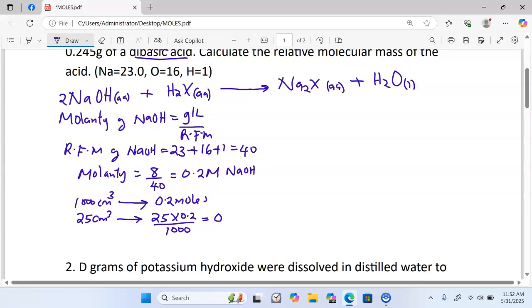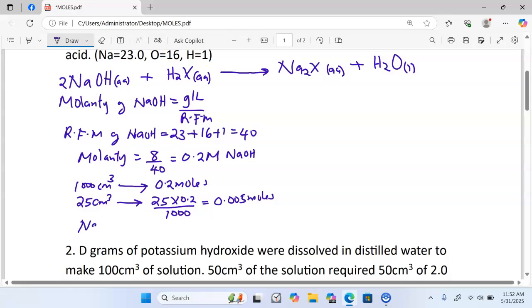and 25 centimeter cubic would contain 25 times 0.2 divided by 1,000, and this one is going to give us 0.005 moles. Since we have the number of moles of sodium hydroxide, we can get the number of moles of the dibasic acid using the mole ratio. Moles of H2X would be equal to, remember the mole ratio is 2 to 1, and therefore the number of moles of the dibasic acid would be half of those of the base, which is 0.005, giving us 0.0025 moles.